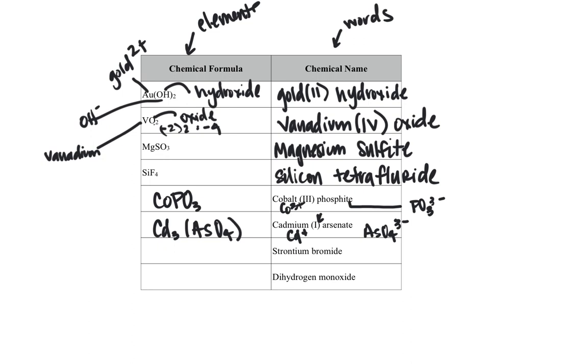So next, strontium bromide. Strontium is a regular metal in one of the first two columns. And so it is Sr2 plus, and we know that bromide is Br minus. So you need two bromines to balance out this strontium. So you have SrBr2.